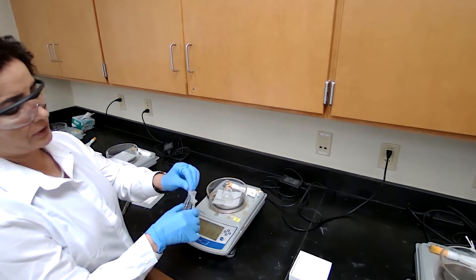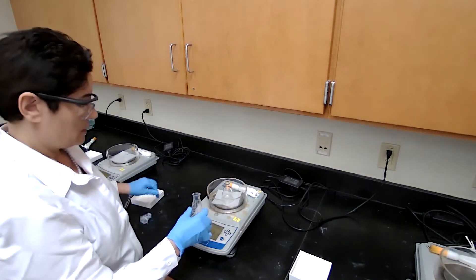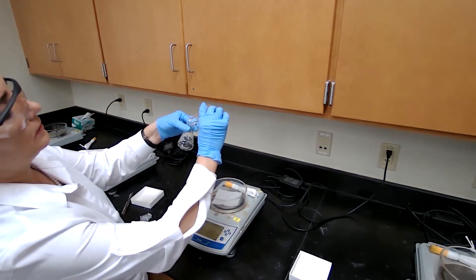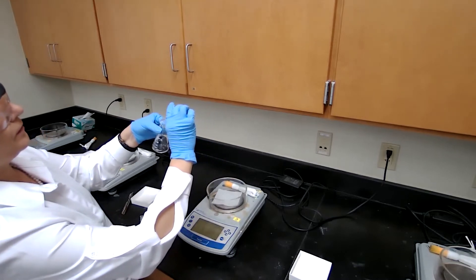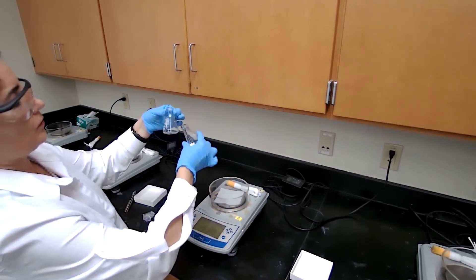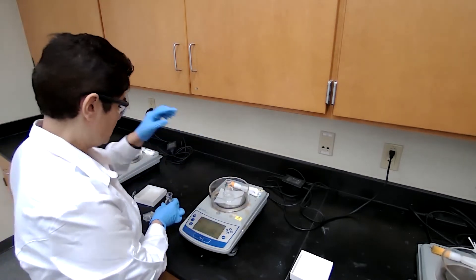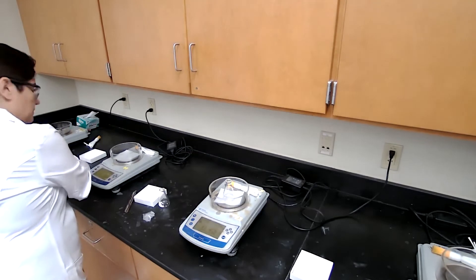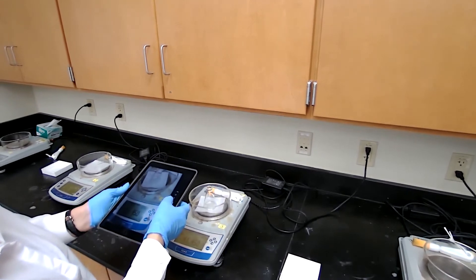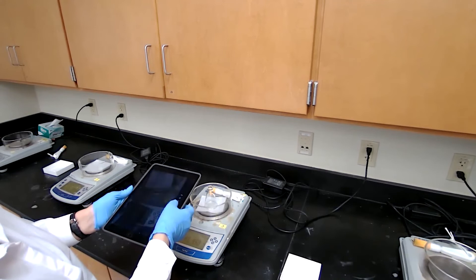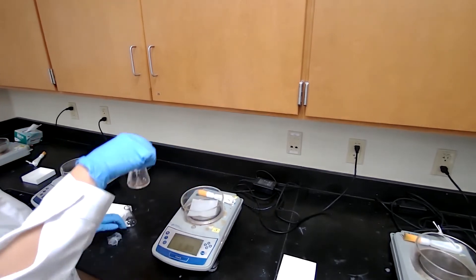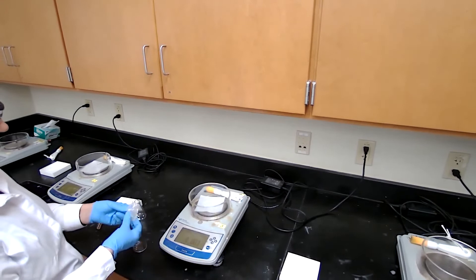Then transfer the liquid, only the liquid portion without getting any solid in. And measure the mass again. We are going to take a picture so I would include the picture. You read it from the picture. We have the product, which you can calculate the percent yield based on the mass.